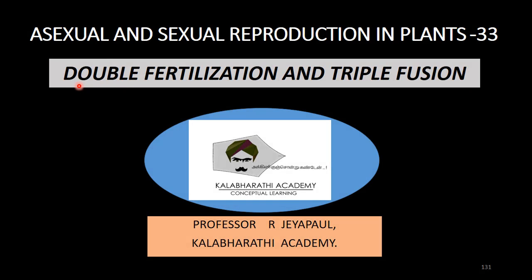Good morning, students. Welcome to Kalabarid Academy. In the beginning of the discussion, double fertilization in angiosperms — single fertilization occurs in higher level animals, whereas here, in angiosperms, double fertilization and triple fusion happen.